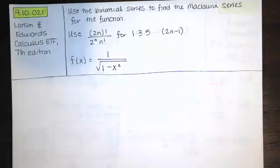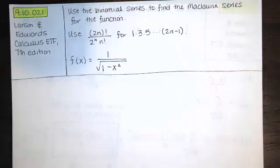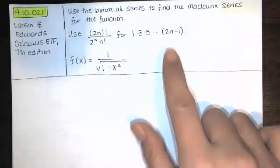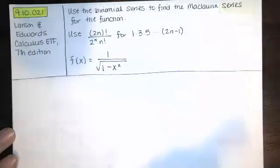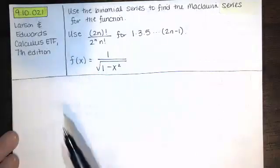In this video we solve problem 9.10.021 from the Larson and Edwards Calculus Early Transcendental Functions text, 7th edition. We're asked to use the binomial series to find the Maclaurin series for the function, and we're told to use 2n factorial over 2 to the n times n factorial for the product 1 times 3 times 5, all the way down to 2n minus 1. And then we're given this function.